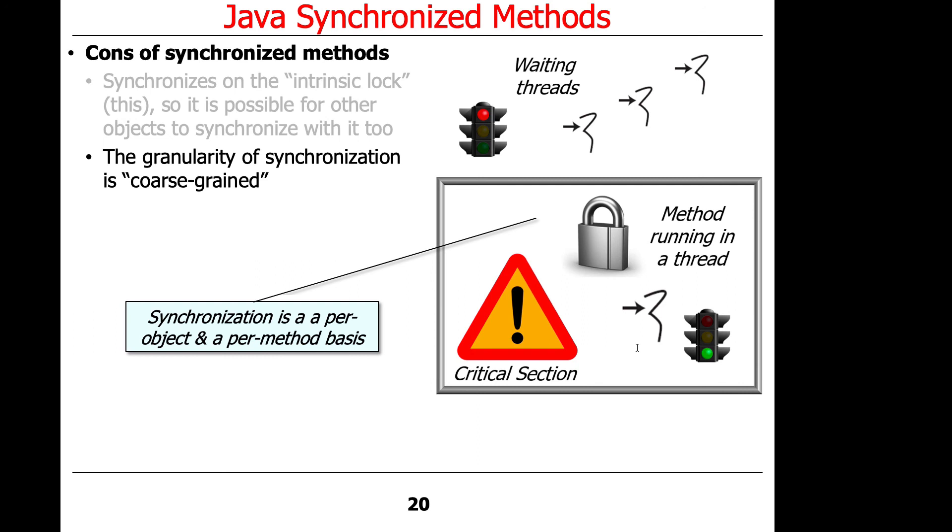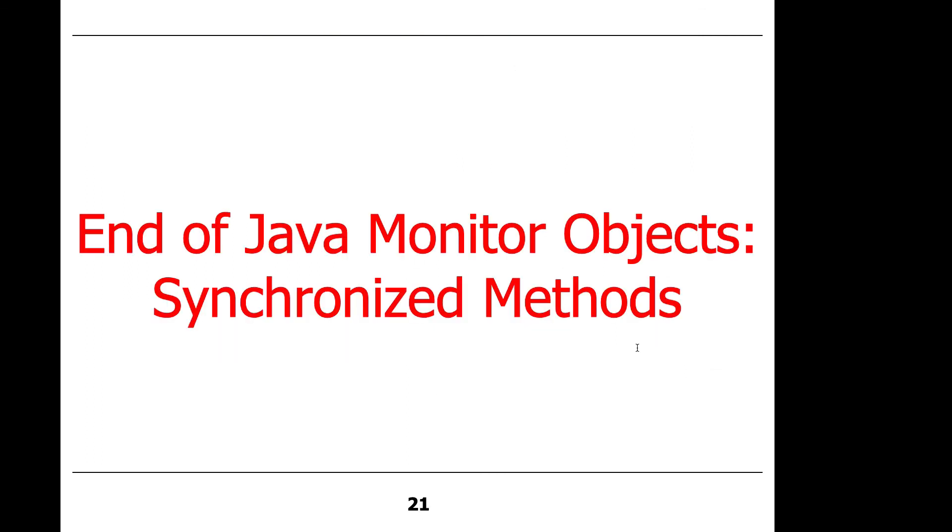So if you have a synchronized method and a really long implementation with hundreds of lines of code, you've just made that entire hundred lines of code the point of synchronization, which could be way, way more than you ever need. Okay, so that's a quick overview of synchronized methods.